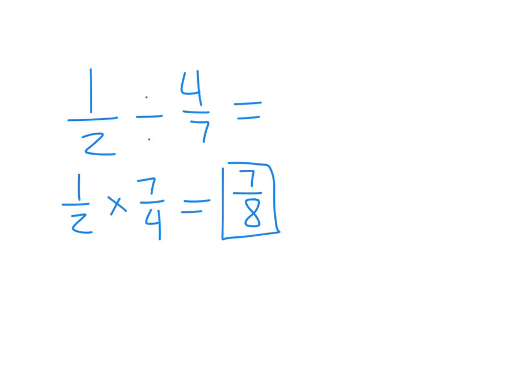We'll do one more of this type, and then I'll give you a change. So one-half divided by four-sevenths. So rewrite one-half times seven over four. Seven times one is seven. Four times two is eight. That cannot be simplified any further.